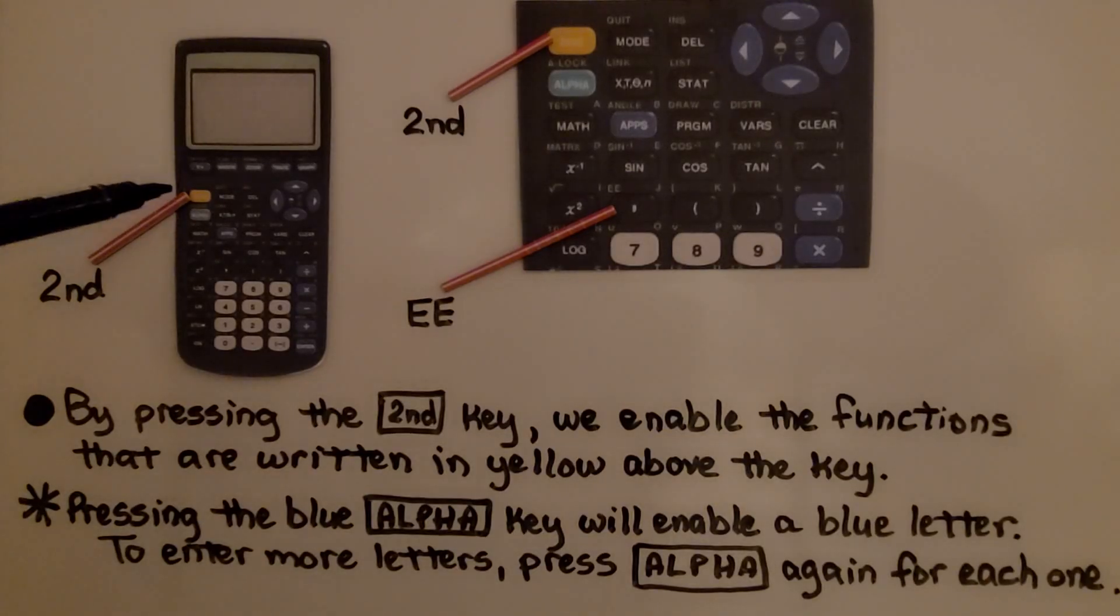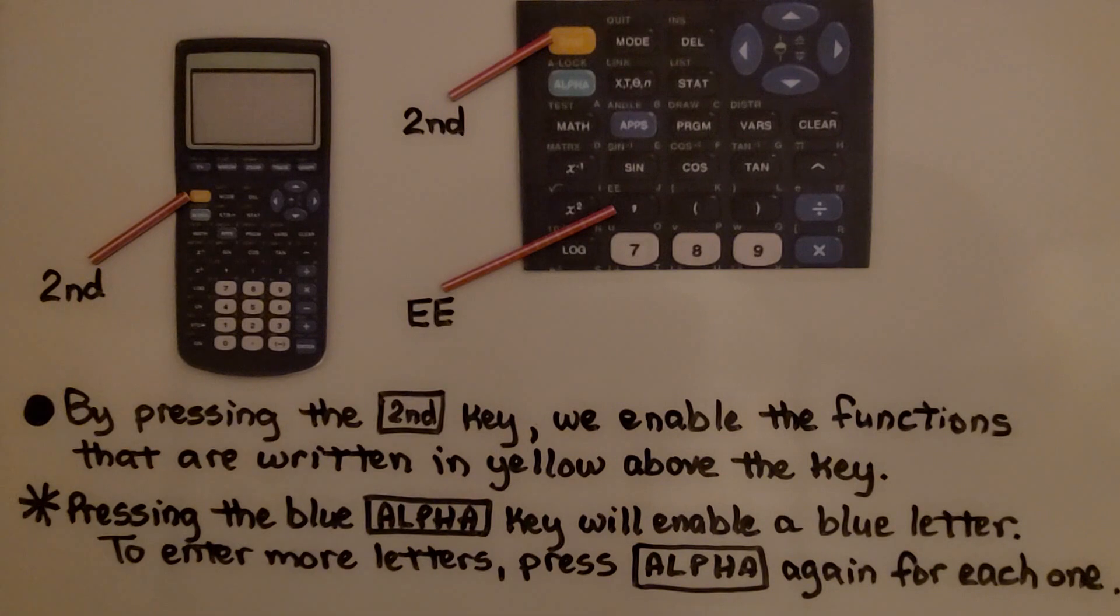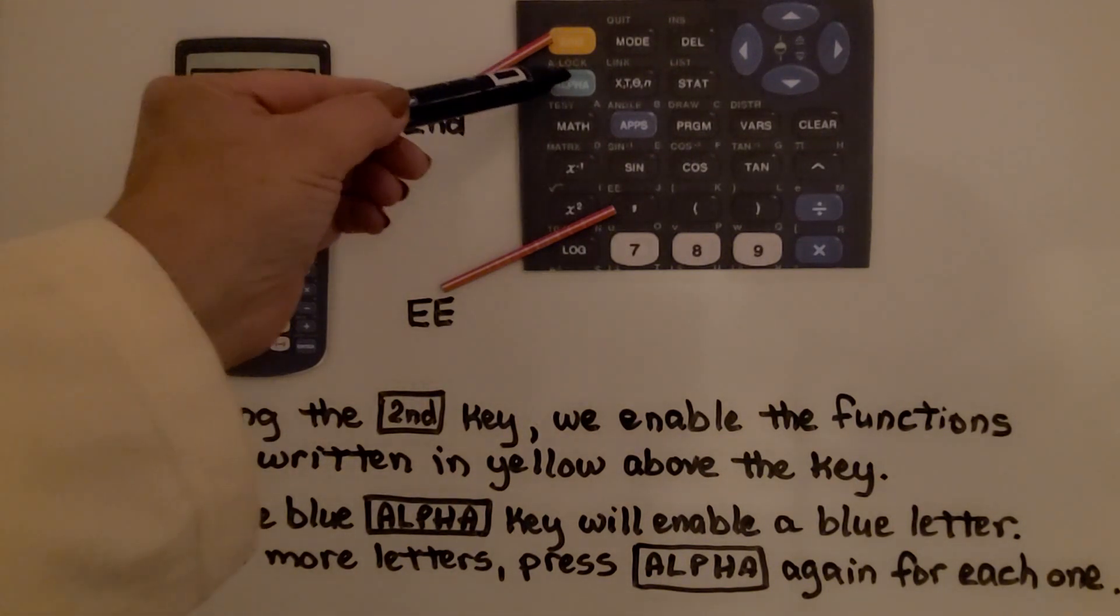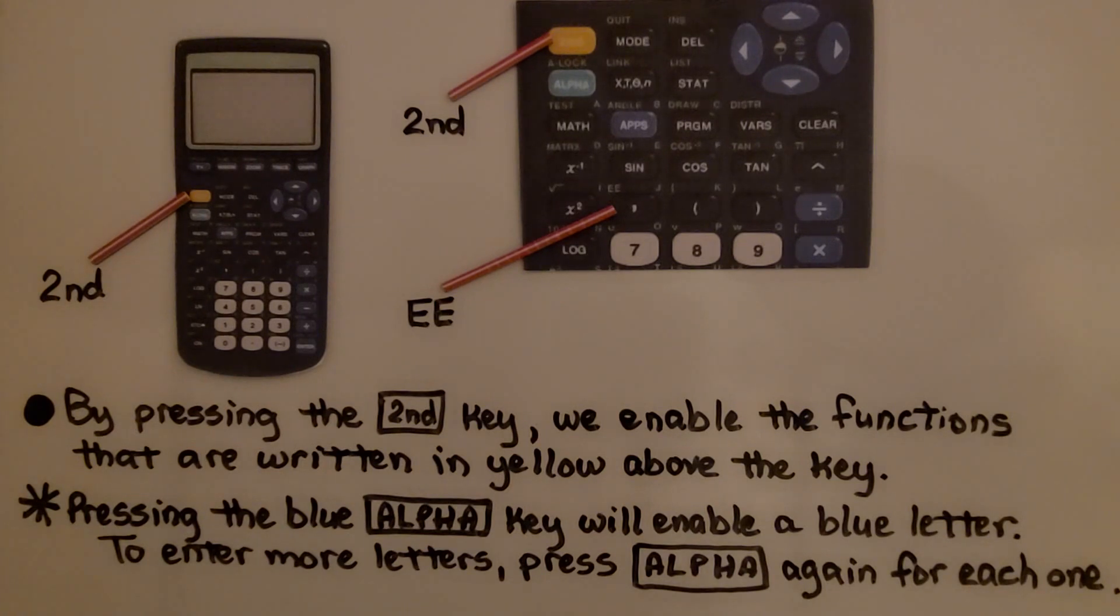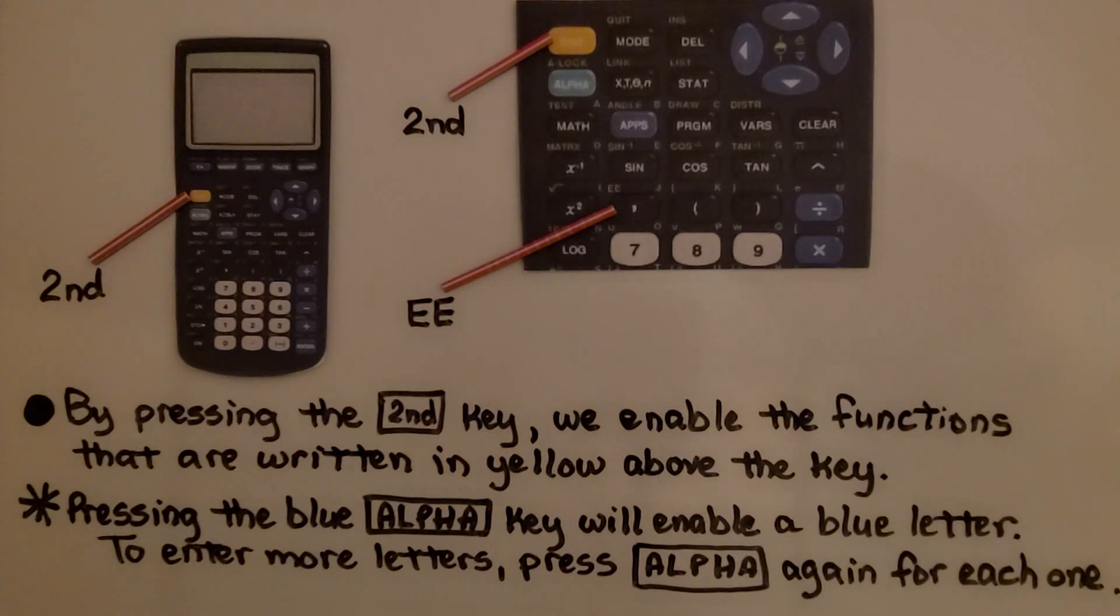By pressing the second key, we'll enable the functions that are written in yellow above the keys. Pressing this blue alpha key right here will enable a blue letter that's written above the keys. To enter more letters, press alpha again for each one. So we're not going to use this, I just thought that would be interesting for you.